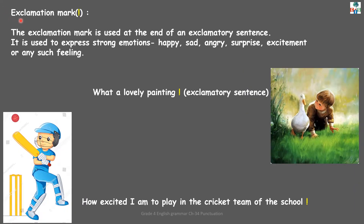Let's see another punctuation mark: the exclamation mark. The exclamation mark is used at the end of an exclamatory sentence — a sentence which expresses strong feelings or emotions like happy, sad, angry, surprised, or excitement. For example: 'What a lovely painting!' — this is an exclamatory sentence, showing feeling about the painting. Another example: 'How excited I am to play in the cricket team of the school!' The boy is showing his excitement, so we put an exclamation mark at the end.